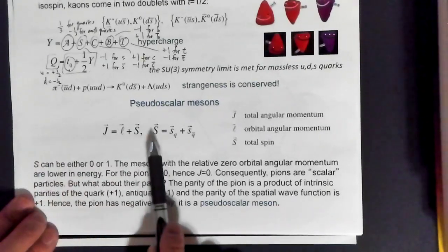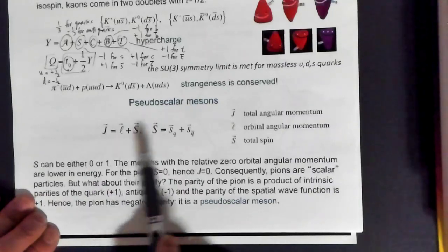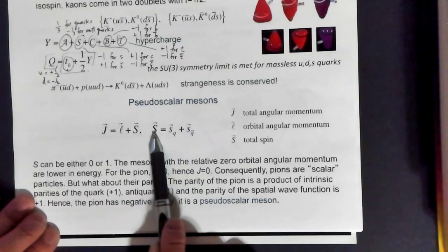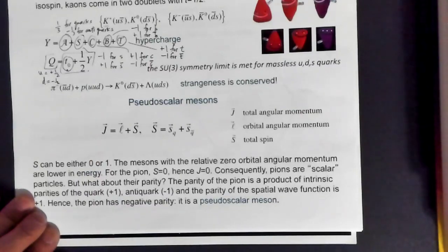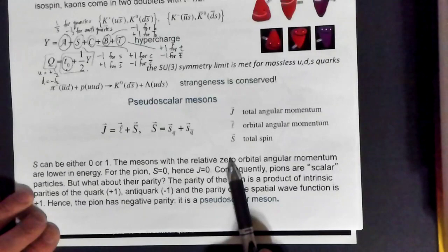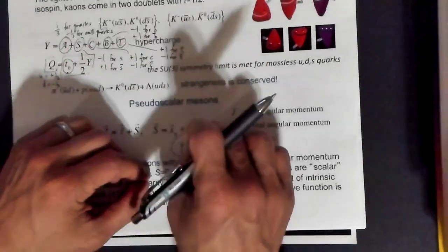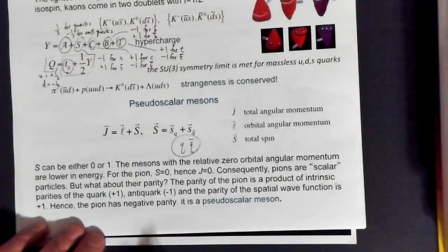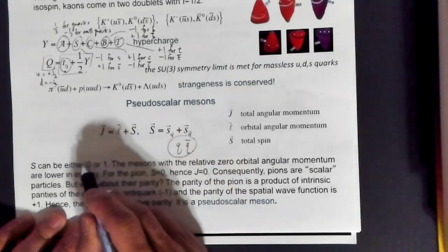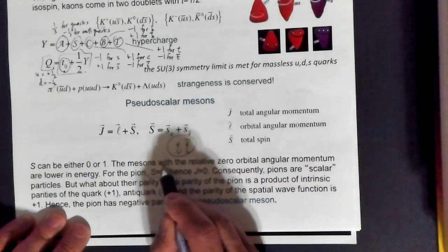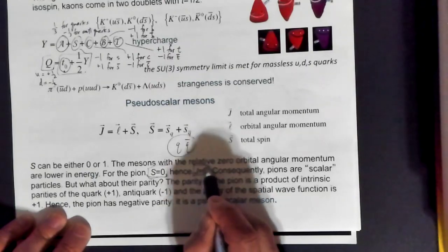For two spin-1/2 particles, the total intrinsic spin can be either zero or one. For the pion, consider the simplest case where the quark and antiquark have no orbital motion — zero orbital angular momentum. The pion is the case where the total intrinsic spin is zero, and because there's no orbital angular momentum, the total angular momentum J is also zero.